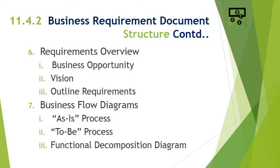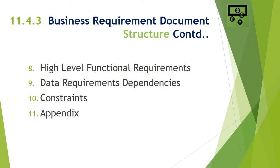In the business flow diagram section, the current as-is process and the to-be process or target state are captured. There is also a functional decomposition diagram which defines different functions of the project. The difference between the as-is and to-be process diagrams can show the progress that will be made by the requirements. The BRD can also capture functional requirements at a high level so that business users can have a view of the functionalities that delivery of the project will cover.